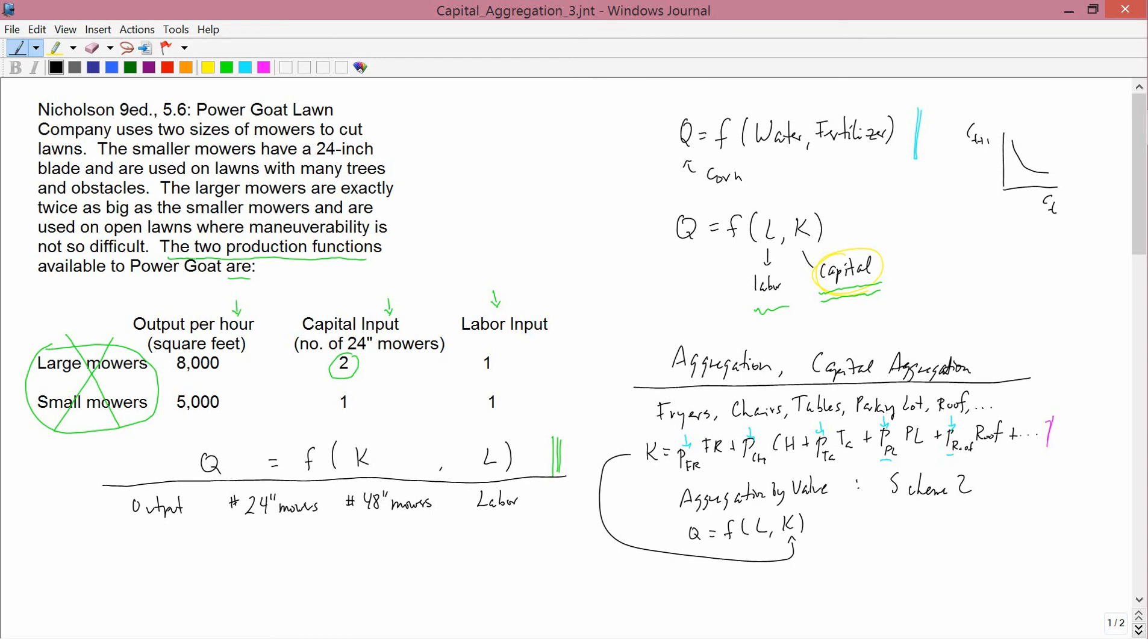You get 8,000 square feet per hour using one 48-inch mower, no 24-inch mowers, and one unit of labor. You get 5,000 square feet per hour using one 24-inch mower, no 48-inch mower, and one unit of labor.